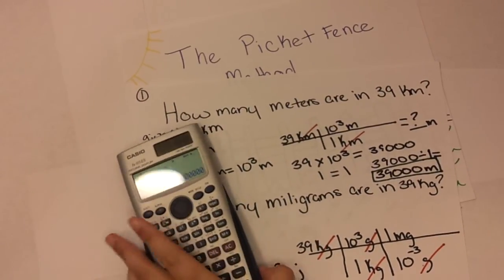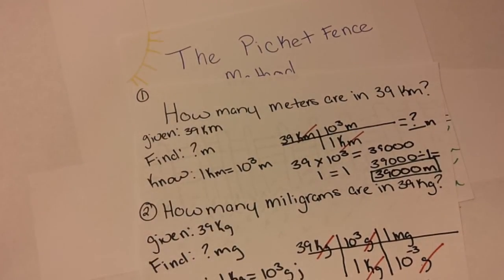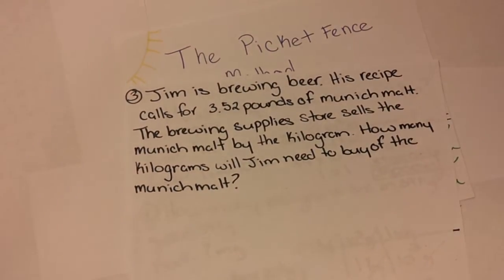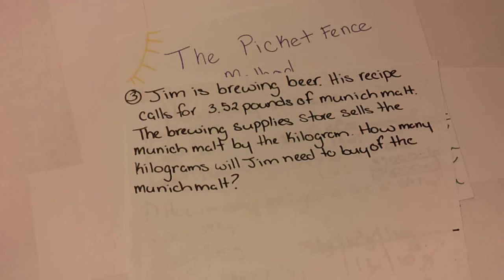And I have one more example for you, and this one is a little bit longer. It's a word problem. Jim is brewing beer. His recipe calls for 3.52 pounds of Munich malt. The brewing supply store sells the Munich malt by the kilogram. How many kilograms will Jim need to buy of the Munich malt?